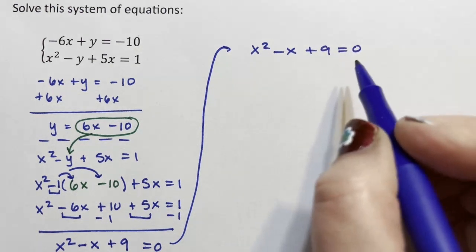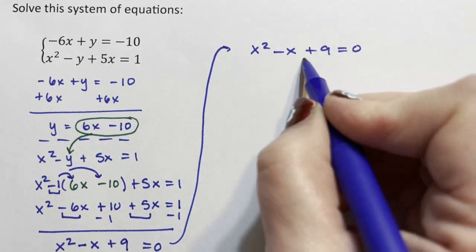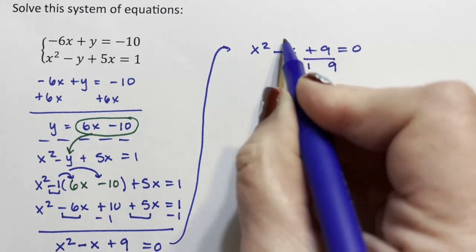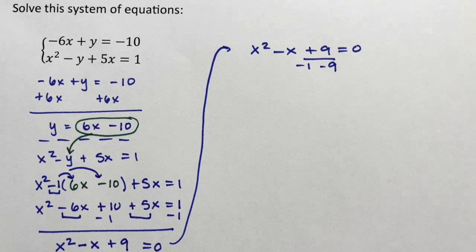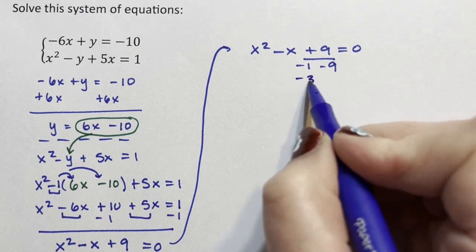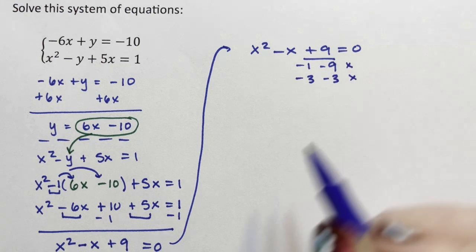To factor this, because this is positive, the signs have to be the same. But because this is negative and they have to add to a negative, they both need to be negative. Well, that doesn't add up to 1. And negative 3, negative 3 also does not add up to 1.